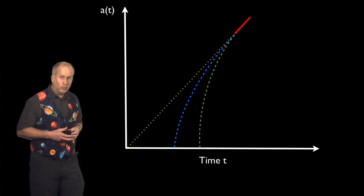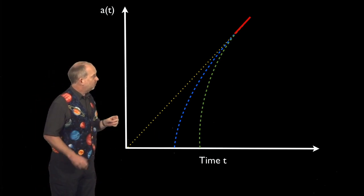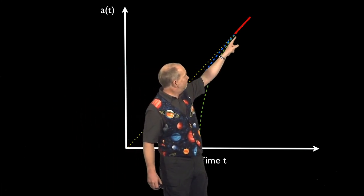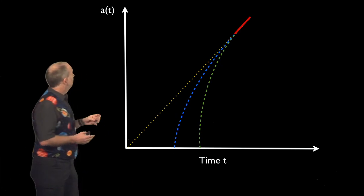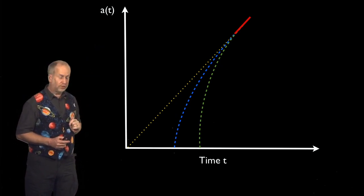We, of course, cannot see the future, so what astronomers were looking at was the past. That's today, and the big debate was which of these lines gave us an accurate picture of the scale factor of the universe versus time.